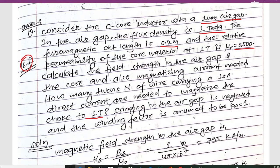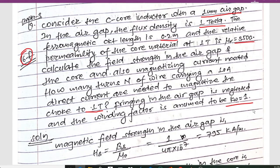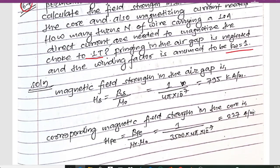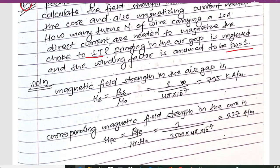The winding factor is assumed as kw = 1. The magnetic field strength in the air gap is calculated as H_δ = B_δ / μ₀. With B = 1 T and μ₀ = 4π × 10⁻⁷, we get H_δ = 795 kilo-amperes per meter.